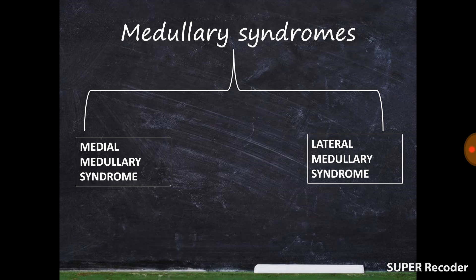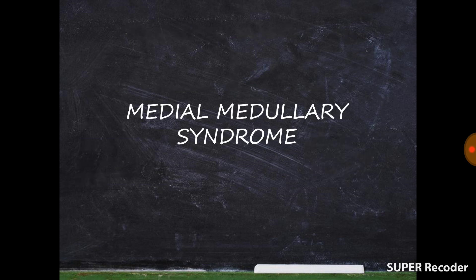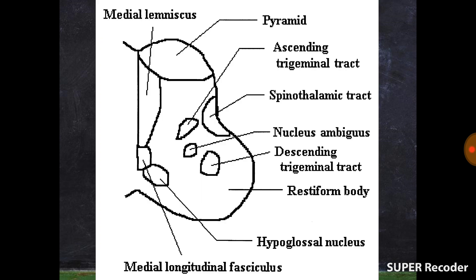Now that we're done with the blood supply, let's focus on the two medullary syndromes. The first is the medial medullary syndrome and the other is the lateral medullary syndrome. We'll start with the medial medullary syndrome, which is also called the Dejerine syndrome. To understand its signs and symptoms, we need to know which structures are present in the medial part of the medulla from anterior to posterior.